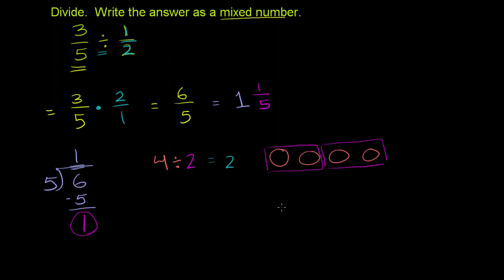Now what if I took those same 4 objects? 1, 2, 3, 4. So I'm taking those same 4 objects. Instead of dividing them into groups of 2, I want to divide them into groups of 1 half, which means each group will have half of an object in it.